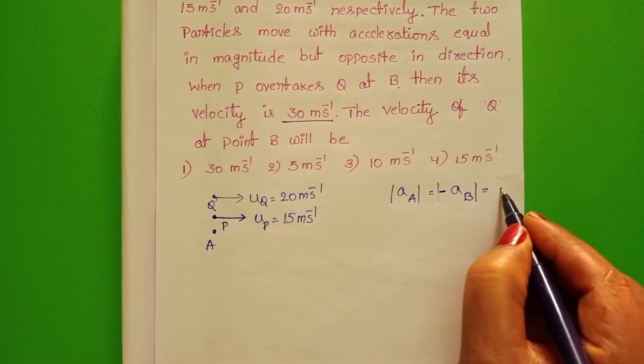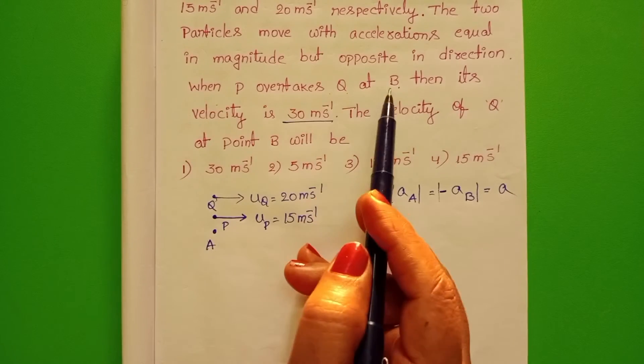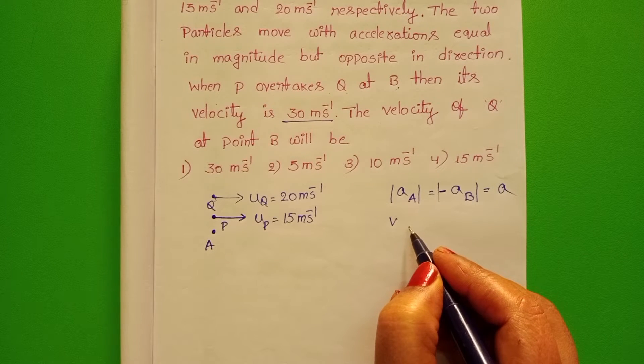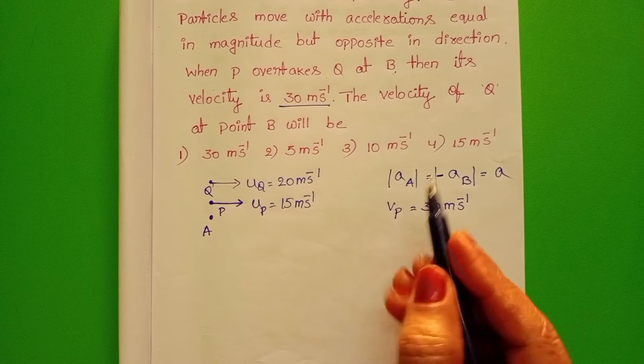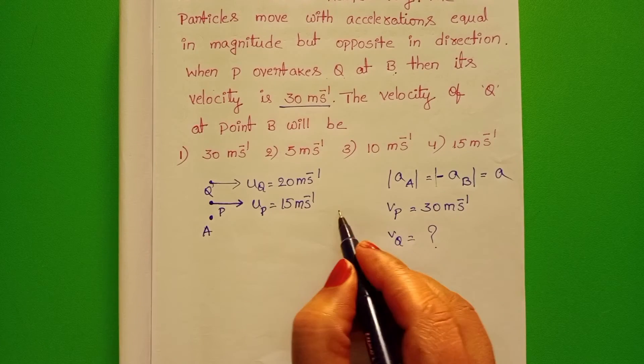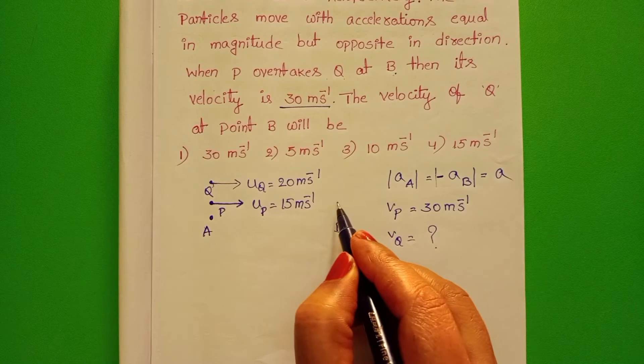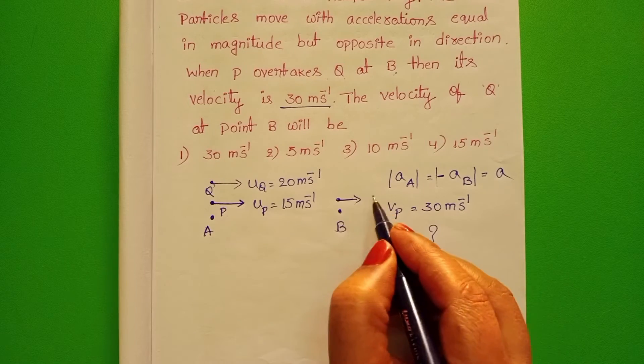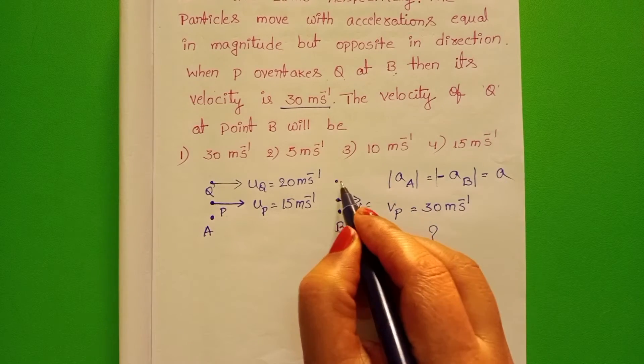Magnitudes same but direction is different. When P overtakes Q at point B, then its velocity is 30 m per second. The velocity of Q at point B. Let us take point B. At this point,